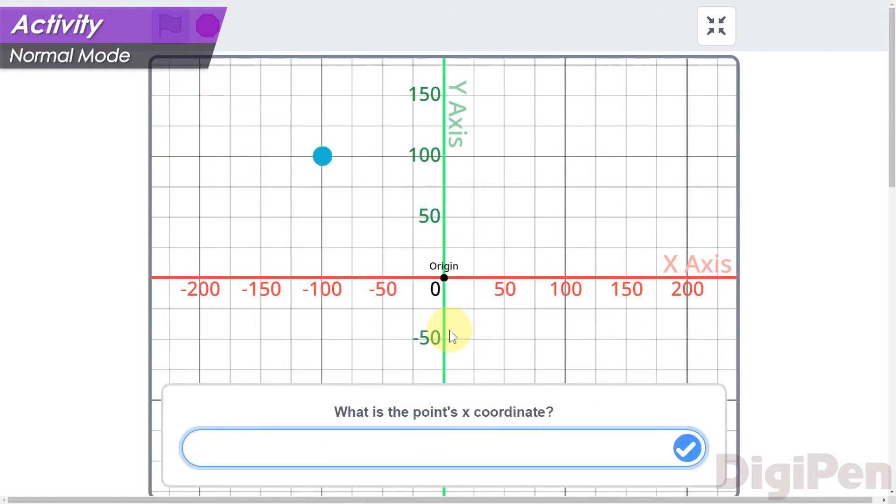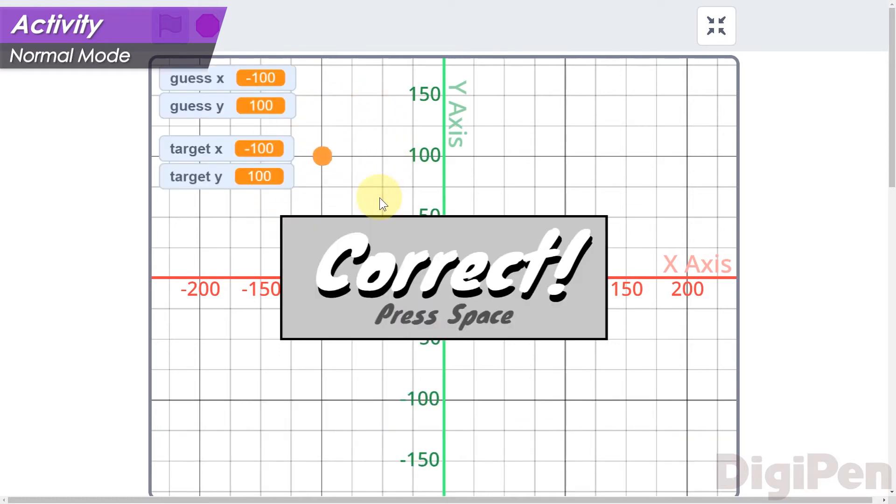Let's try another one. This time, the circle moved to a location 100 units to the left of the origin, and 100 units above it. What are its coordinates? Negative 100, 100, of course. Correct again.